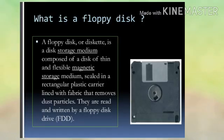A floppy disk, or diskette, is a disk storage medium composed of a thin and flexible magnetic storage medium, sealed in a rectangular plastic carrier lined with fabric that removes dust particles. They are read and written by a floppy disk drive.